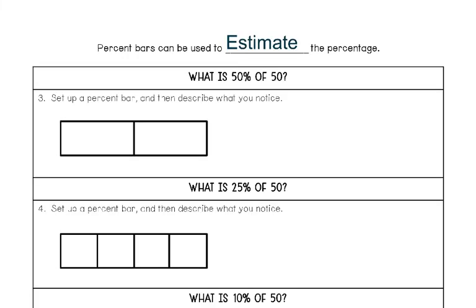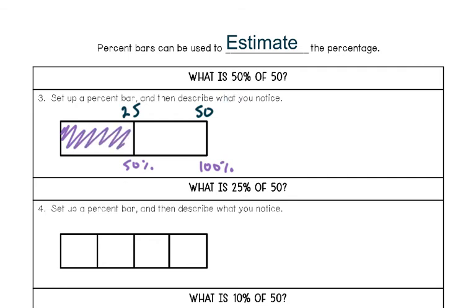Percent bars are useful because they help us estimate percentages. For example: what is 50% of 50? The whole bar represents one whole, and in this case our whole is 50. Setting up the percent bar, I write 50 at the top and 25 at the halfway point. At the percent side, 50 out of 50 is 100%, and half of that is 50%. So when the question asks what is 50% of 50, the whole bar is 50, and shading up to the 50% mark covers half — which is 25. 50% just means half.